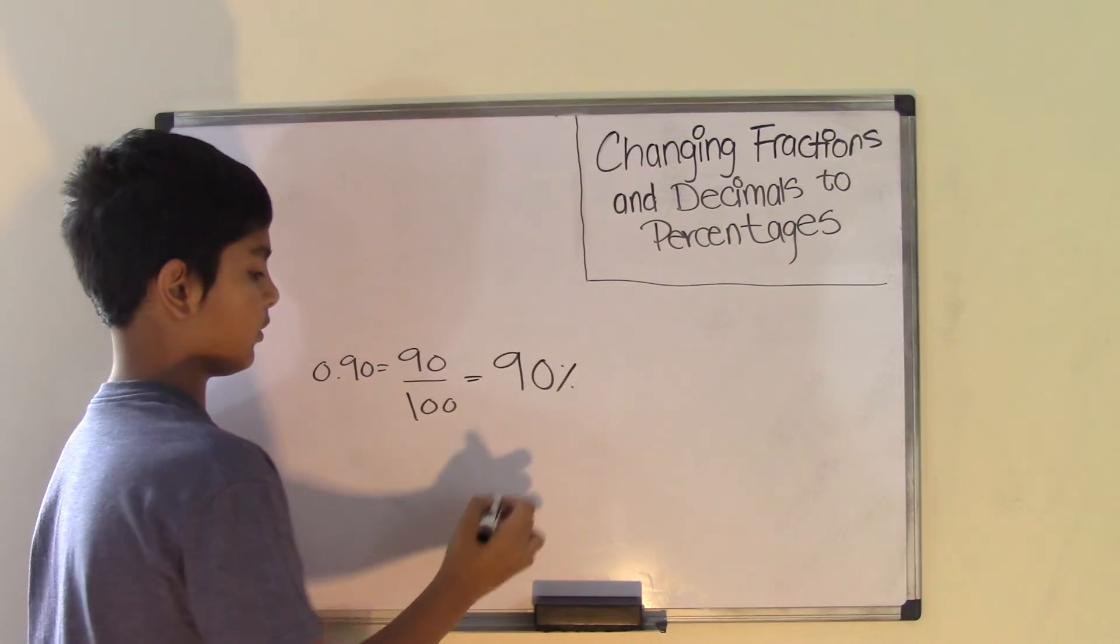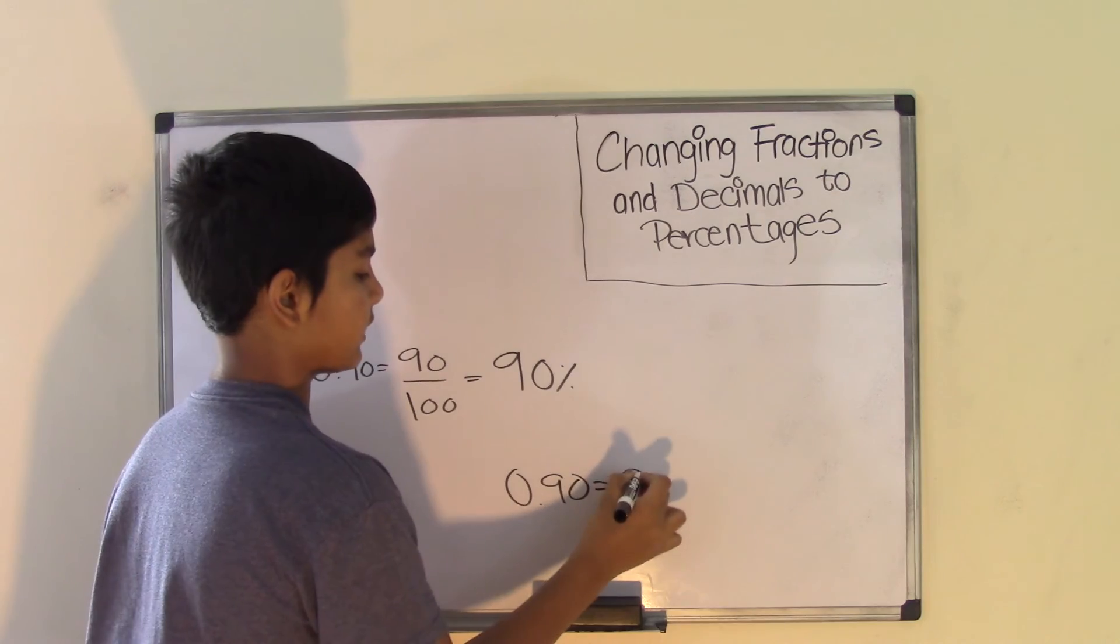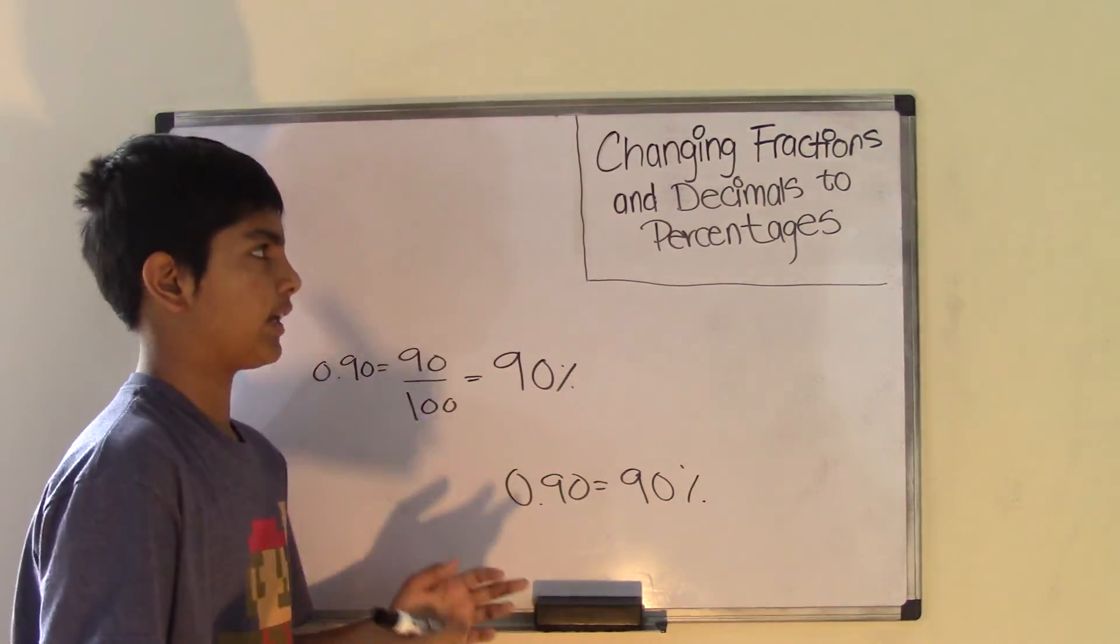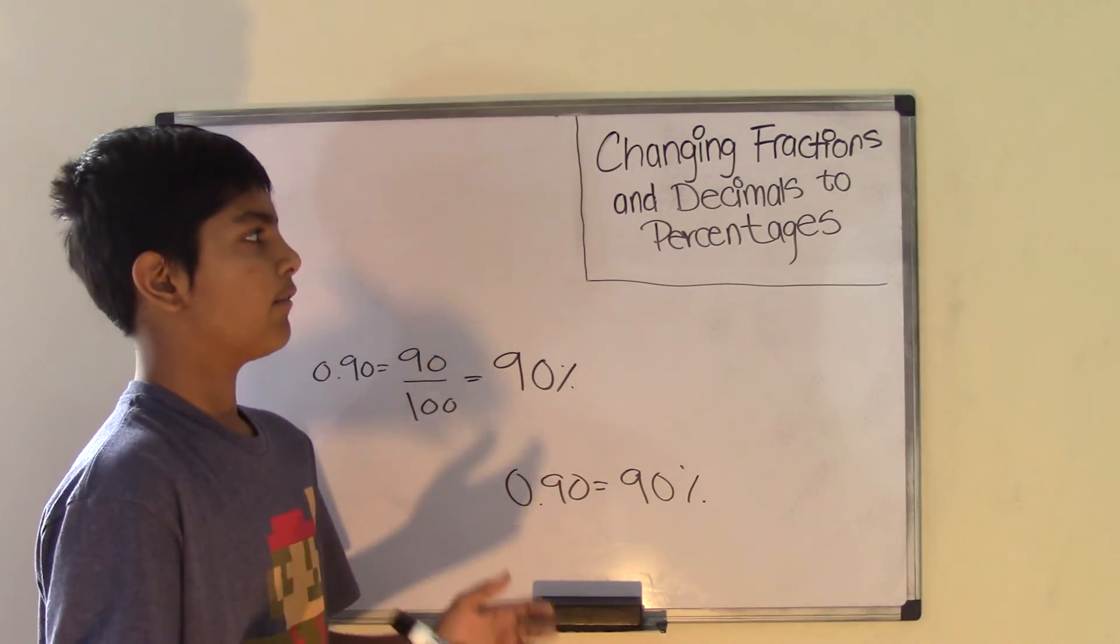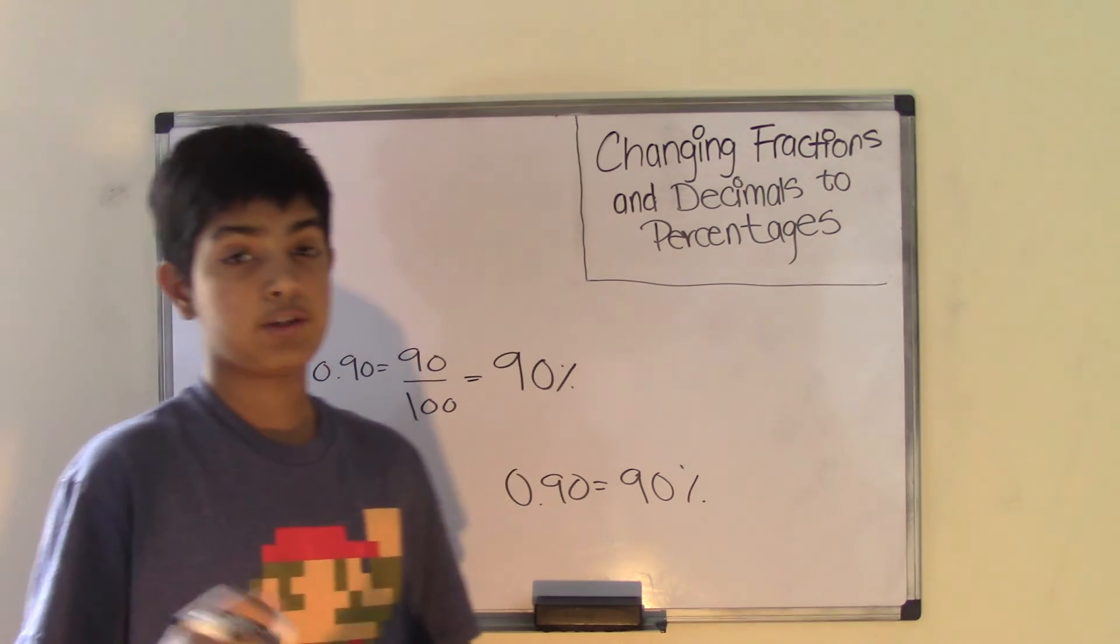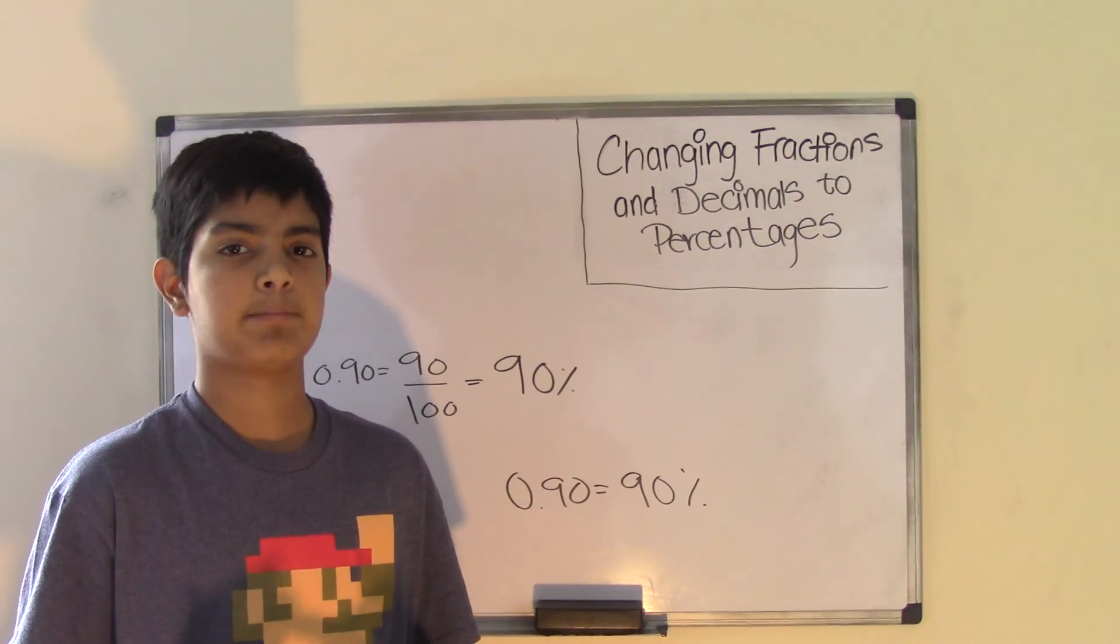So the decimal number 0.90 is equal to 90 percent. So this is how you change the decimal into a percent. What I just showed you is how to change fractions and decimals to percents. I hope you enjoyed this video. Check out our blog at brothersinthemathclub.com, and we will see you guys next time. Bye.